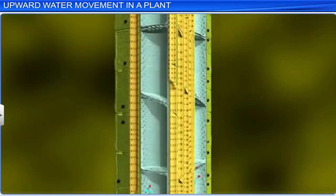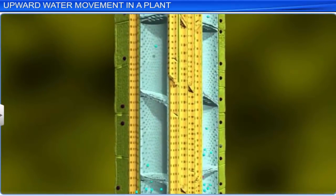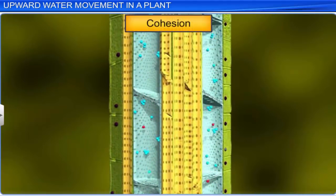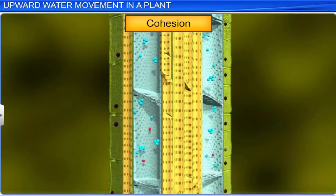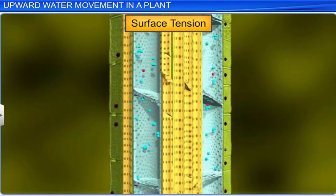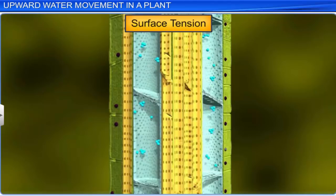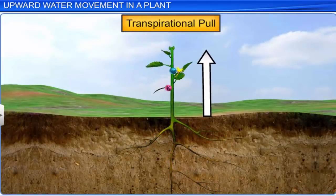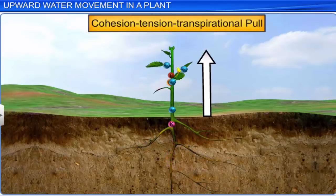Water transport is also aided by cohesion and surface tension. Cohesion is the mutual attraction between water molecules. Surface tension is the force acting on a water molecule travelling upwards in the xylem. Since cohesion tension helps the transpirational pull, it is also known as the cohesion tension transpirational pull model of water transport.